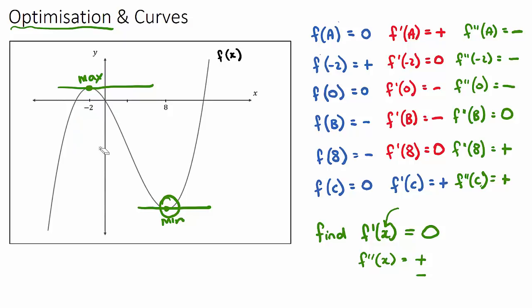These questions do take practice. The goal of this video was for you to understand the difference between f, f', and f''. If you want to optimize anything, get an equation, derive it, and make it equal to zero — that finds the maximum and minimum spots. Then use the double derivative to test whether it was a minimum or a maximum. I encourage you to practice a few questions. Good luck.